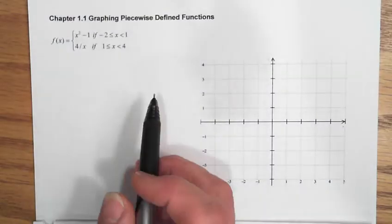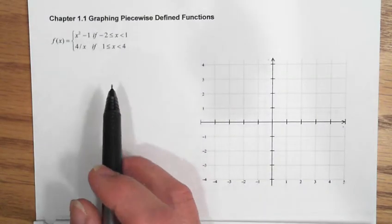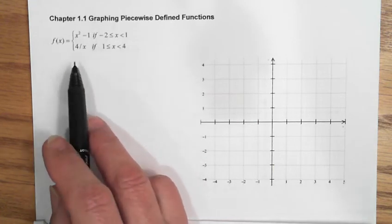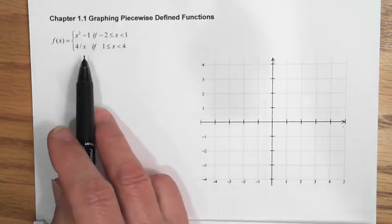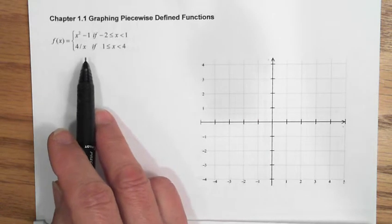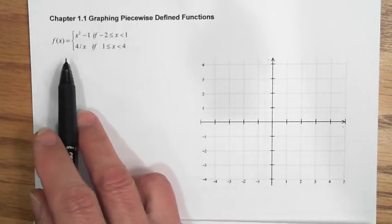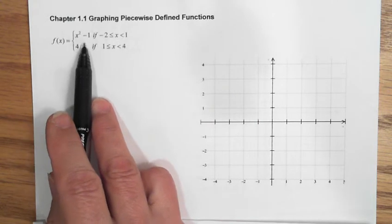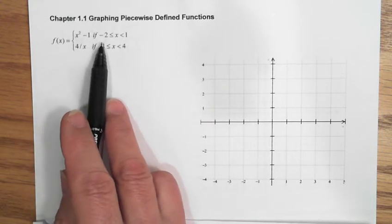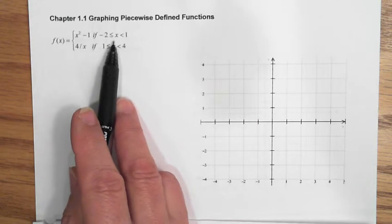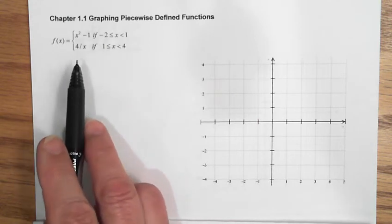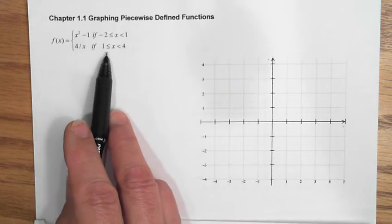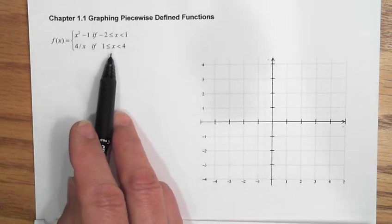Let me graph some piecewise defined functions to show you how this works. This example is similar to one in the text and also in WebAssign. The function is defined as f(x) = x² - 1 if -2 ≤ x < 1, and then in the second piece, it's 4/x if 1 ≤ x < 4.